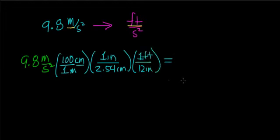And when I do that multiplication out, well, first notice that this unit of meter cancels out with this unit of meter. This unit of centimeter cancels out with this unit of centimeter. And this unit of inch cancels out with this unit of inch. So that the unit of length that I'm left with is feet.